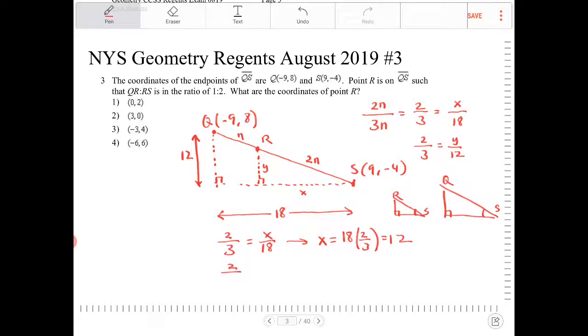I'm going to do the same thing. 2 thirds is equal to Y over 12. So therefore, Y is equal to 12 times 2 thirds. And that's going to give me 8.